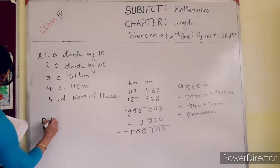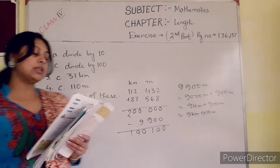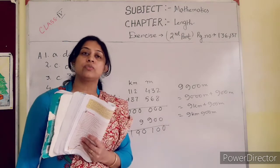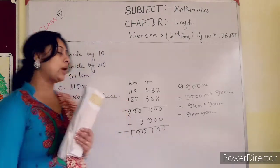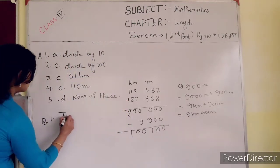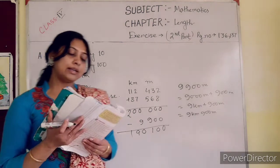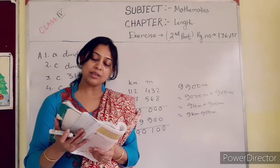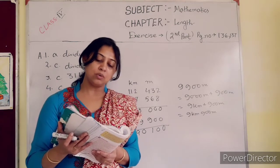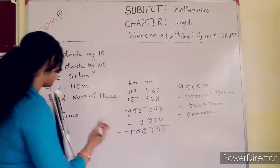B, true and false. 5000 meter equal 5 kilometer. Of course, 5000 meter equal 5 kilometer, so answer is true. Now 2, a decimeter is smaller than a millimeter. Decimeter is, no, millimeter is smaller, so this one is false.